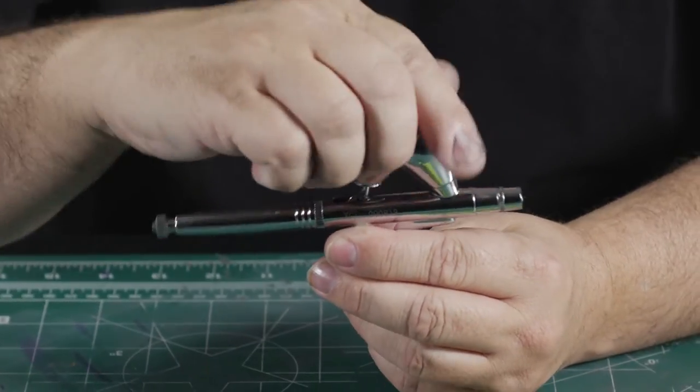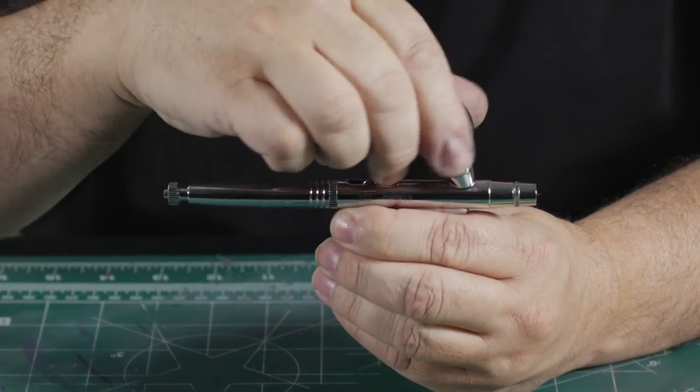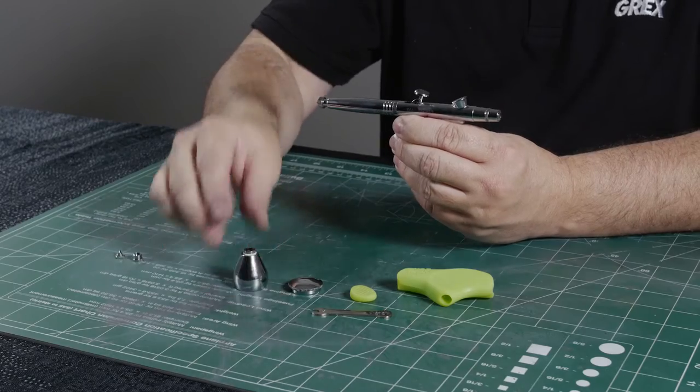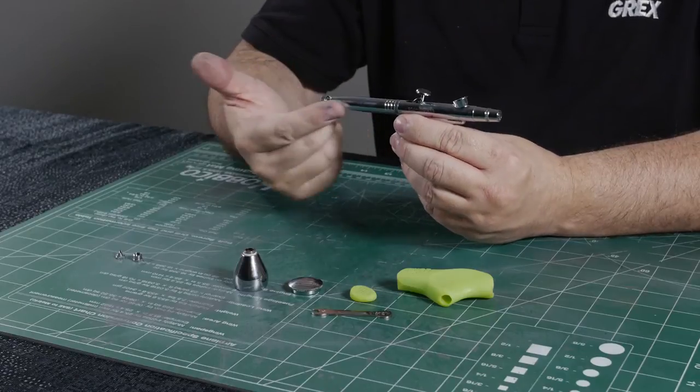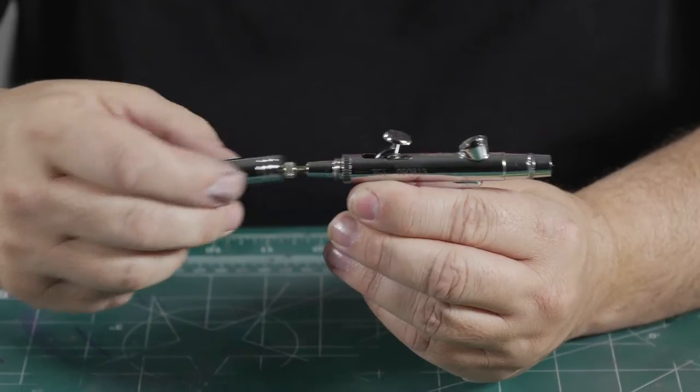Now let's address the color cup. We have a cap and then the color cup itself just on threads. On the back side of the airbrush we have the handle. Simply unthread that.